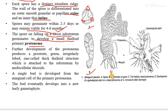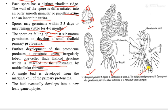The primary protonema is a small thaloid structure. Further development of the protonema produces a prostrate, green, irregularly lobed, one-cell-thick thaloid structure which is attached to the substratum by multicellular rhizoids. This is clearly seen in figure (d), where the protonema develops into an irregularly lobed structure which becomes the gametophytic plant.